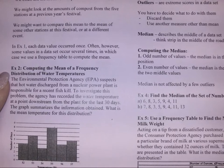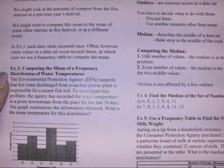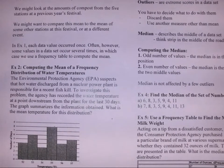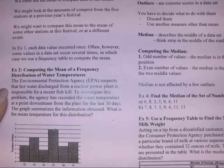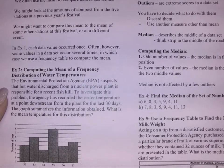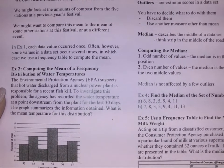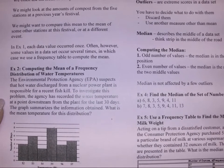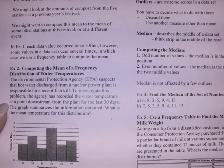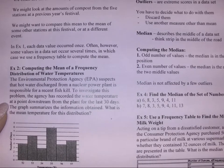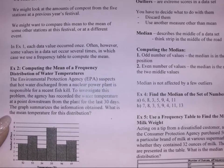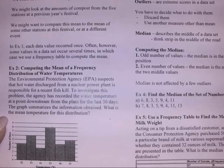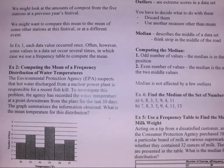We are going to compute the mean of a frequency distribution of water temperatures. The EPA, the Environmental Protection Agency, suspects that hot water discharge from a nuclear power plant is responsible for a recent fish kill. To investigate this problem, the agency has recorded the water temperature at a point downstream from the plant for the last 30 days.